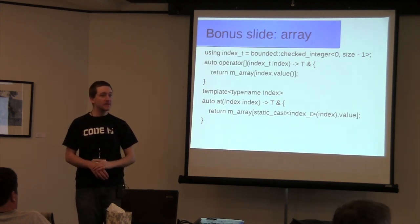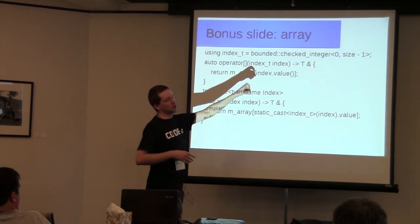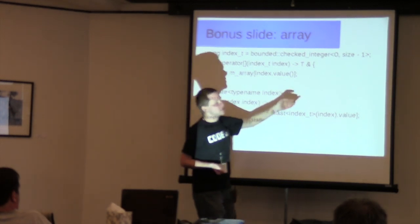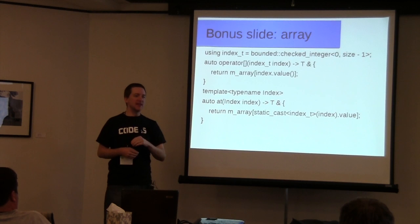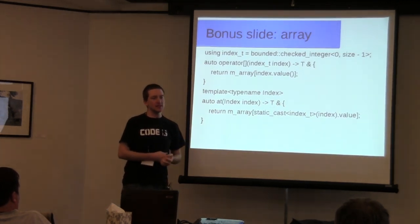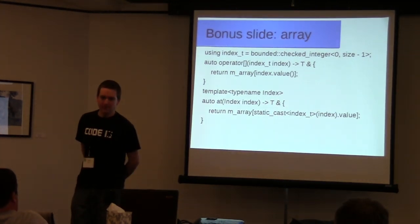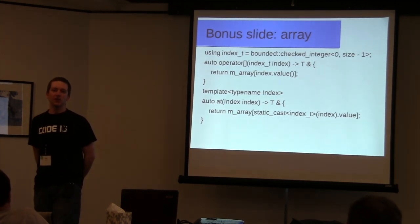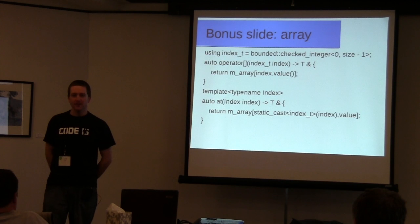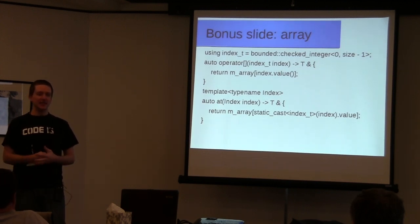The checked integer type is just a typedef for bounded integer with the throw policy, preventing you from having to write the full type. For the clamp policy, alias templates really help simplify things. Is there also a rollover or modulo policy? Not yet — that is something I'm hoping to add probably next week. I just didn't have time to get it in. But that is definitely my highest priority policy to add; it seems like the most obvious addition.